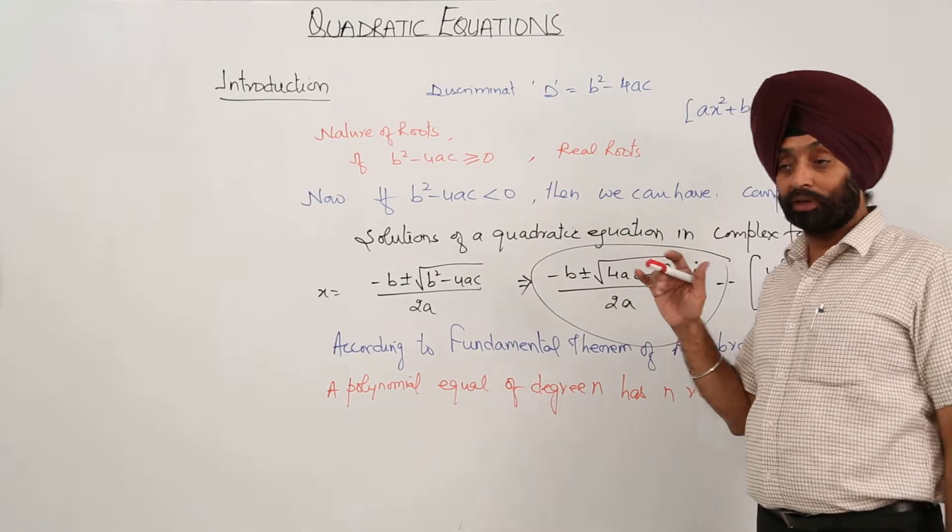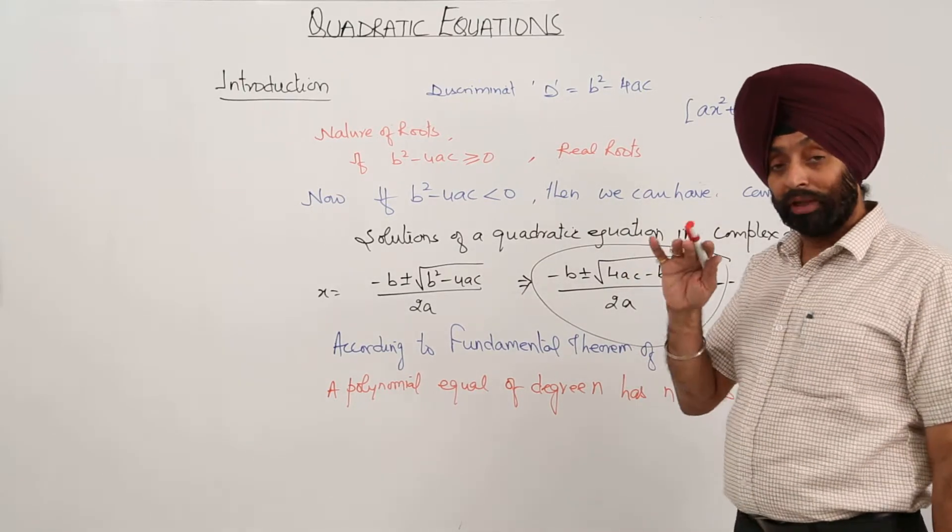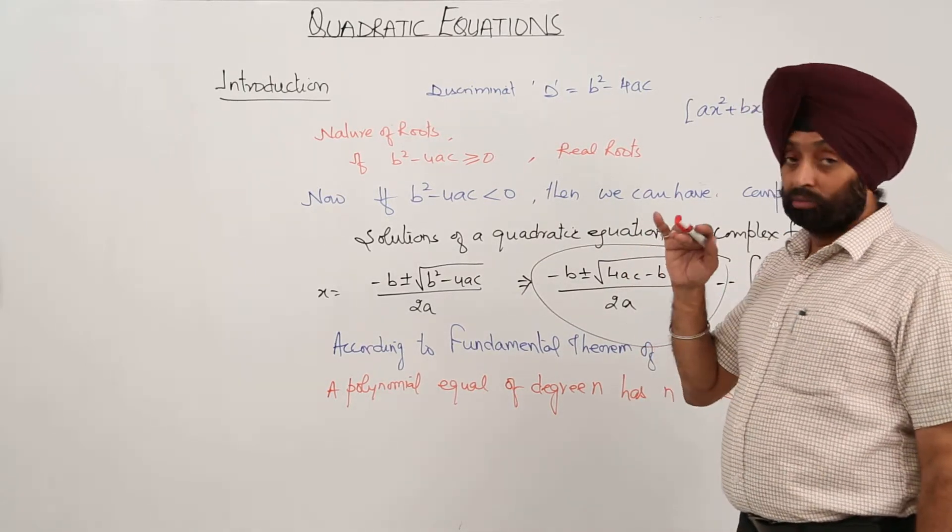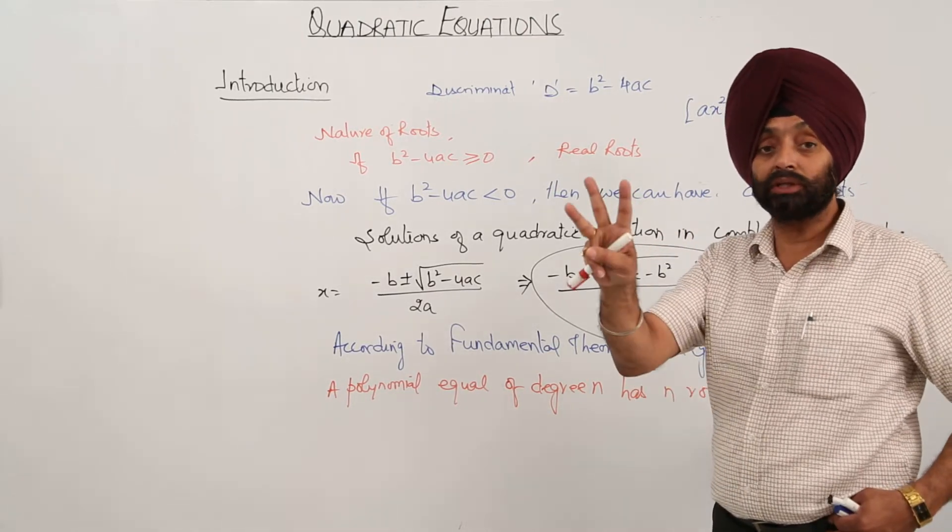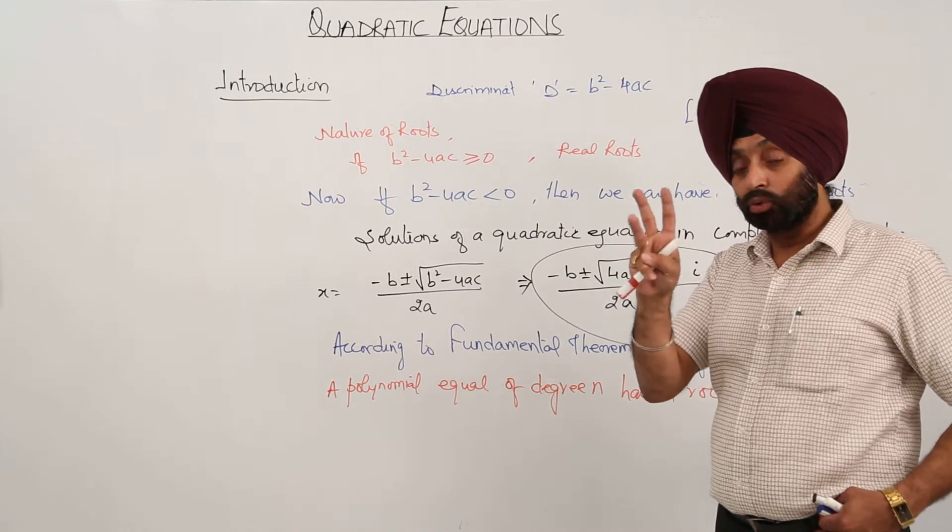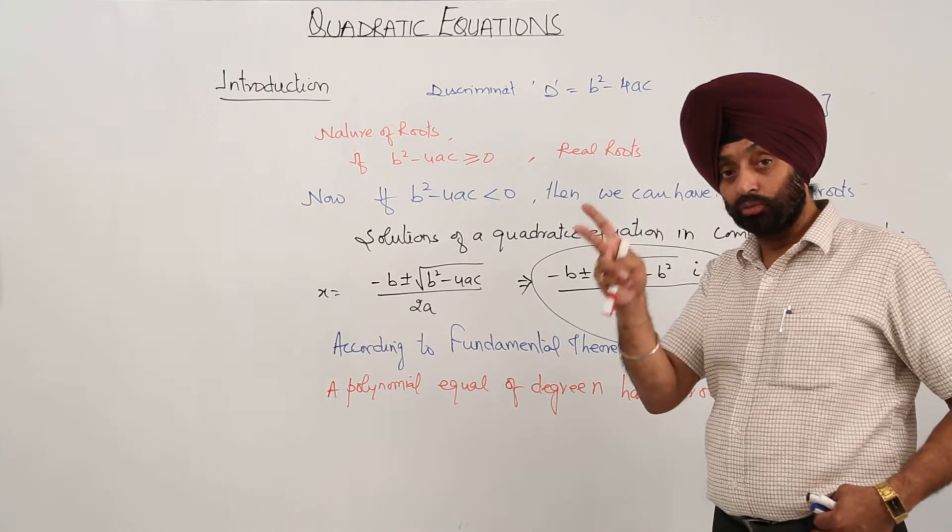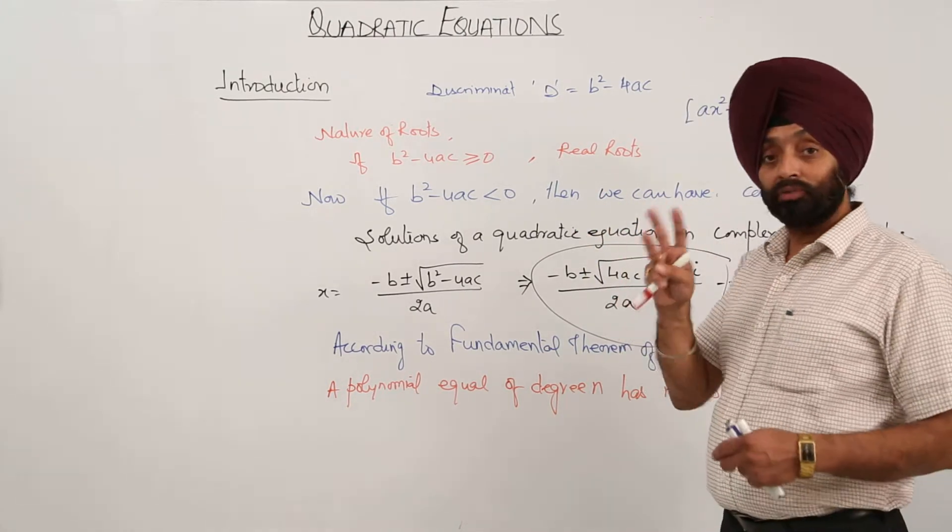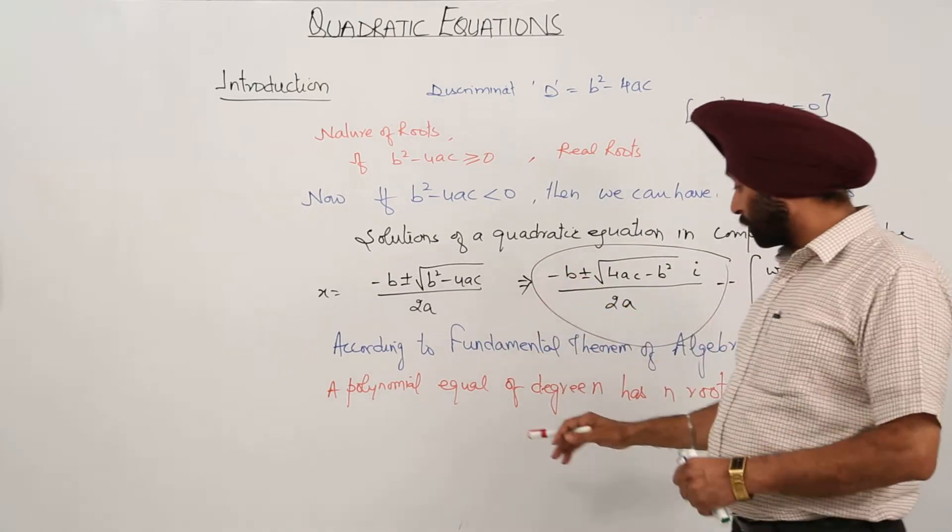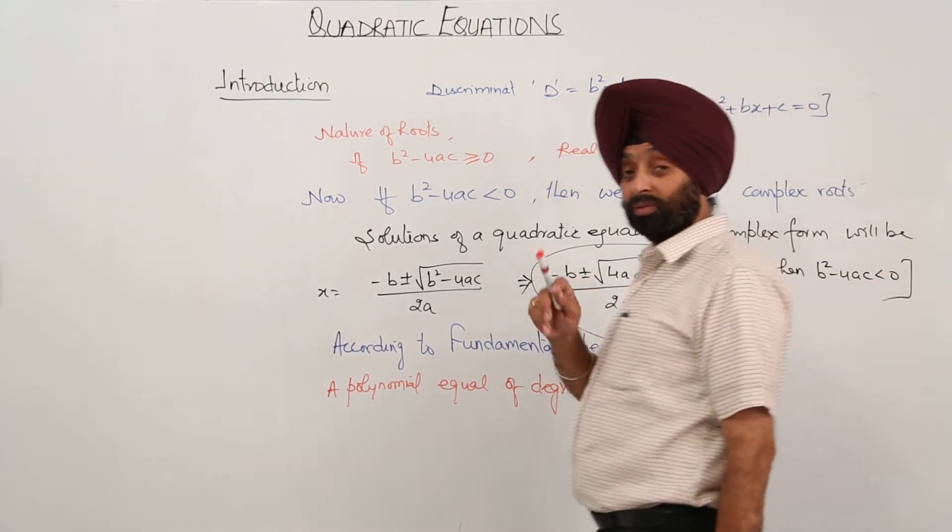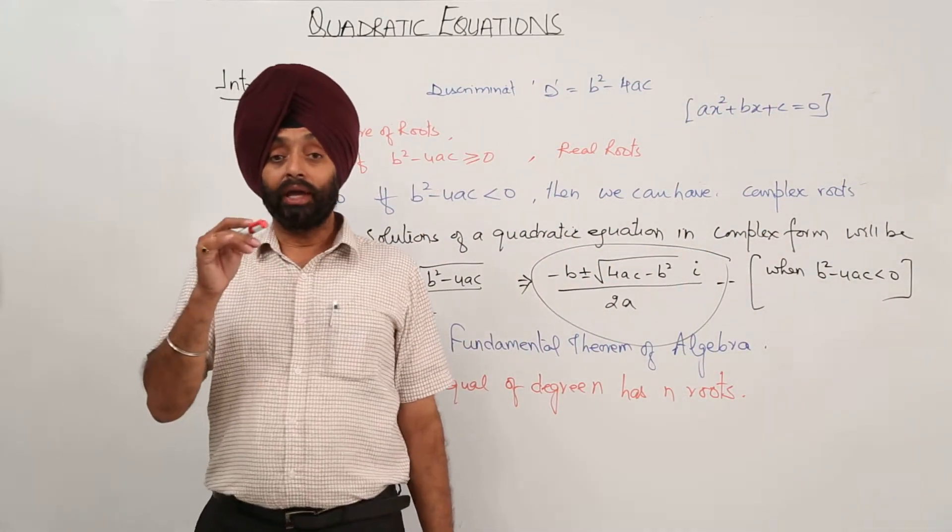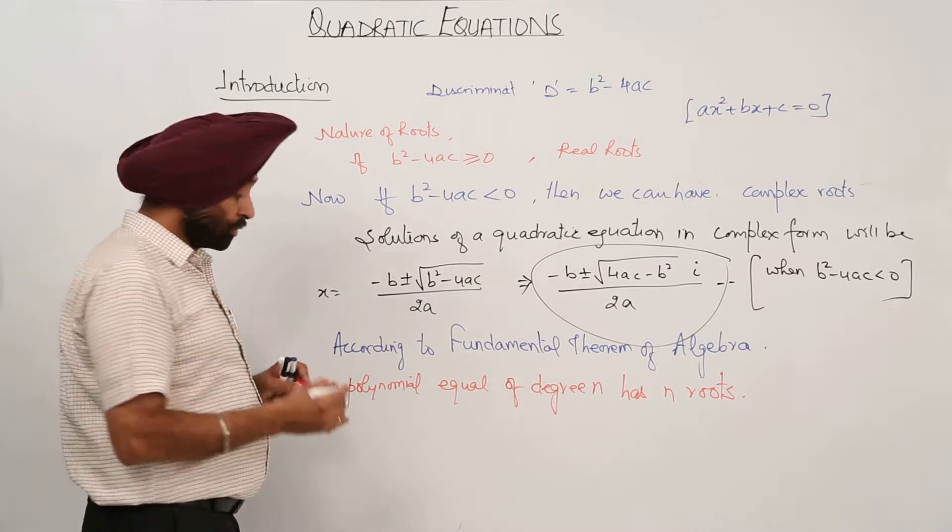Now we have already gone through the complex cube root of unity while doing the complex chapter. We have gone through a complex cube root of unity and it was what? If the power of x that was 3, we were having 3 answers: 1 real and 2 complex forms, 1 real 2 imaginary, total over 3. So now we are going to follow that part. A polynomial equal of degree n has n roots. Till class 10th what you have done?